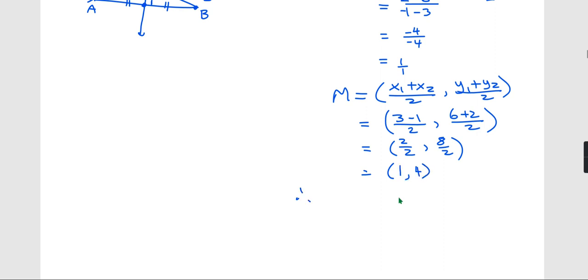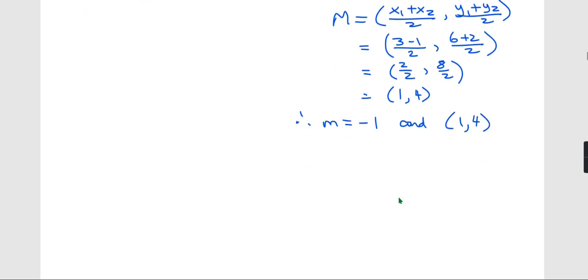So look what I have. Therefore, I have a slope of negative 1, and I have a point (1, 4). So in y equals mx plus b, I'm going to substitute in my slope.